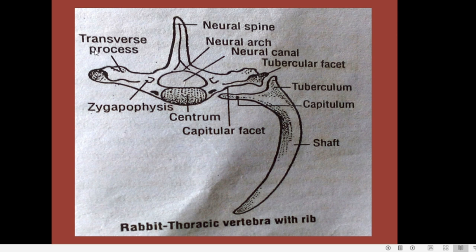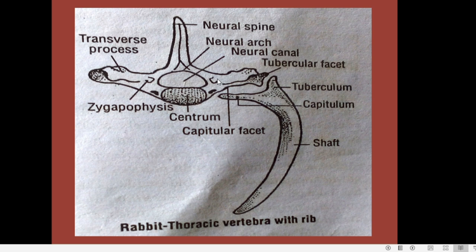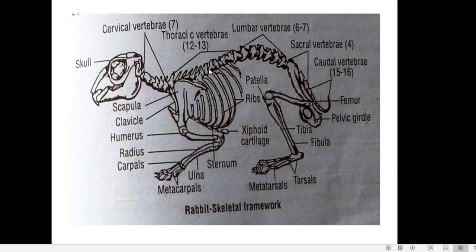Thoracic vertebrae are very similar to lumbar vertebrae except that they lack mammillary processes — the metapophysis and anapophysis seen in front of the pre-zygapophysis and behind the post-zygapophysis respectively in lumbar vertebrae. The thoracic vertebrae have an elongated neural spine, and short, stout transverse processes. An important feature is that the thoracic vertebrae articulate with the ribs.